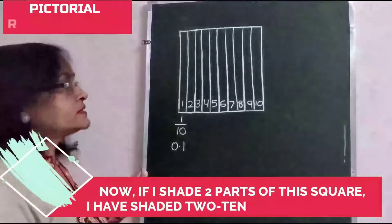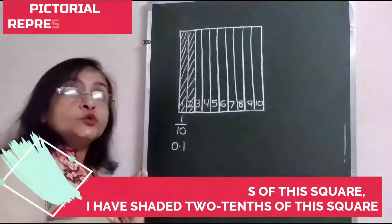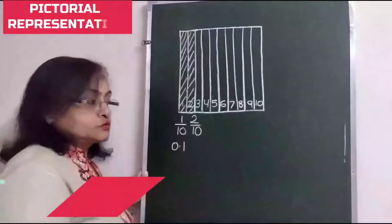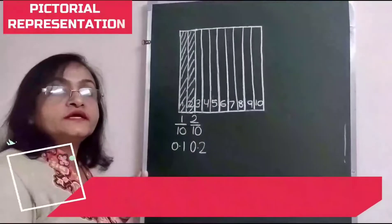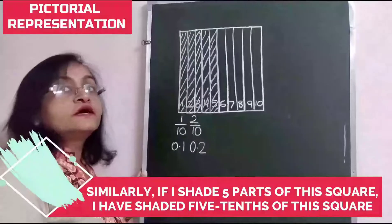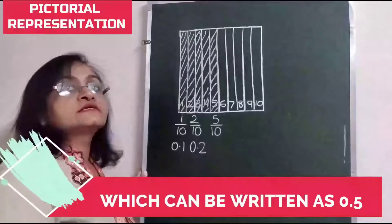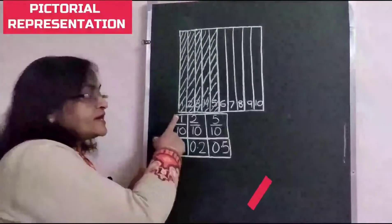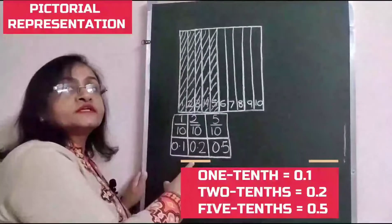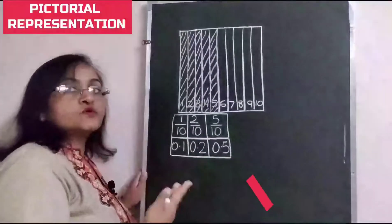If I shade two parts of the square, that means I have shaded two tenths of the square, which can be written as zero point two. Similarly, if I shade five parts of the square, it means I have colored five tenths of the square, which can be written as zero point five. So, one tenth is zero point one, two tenths is zero point two, five tenths is zero point five, and so on.